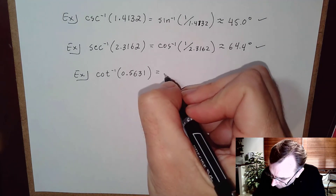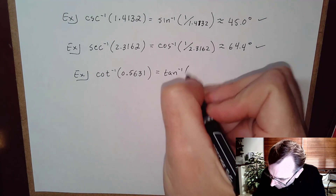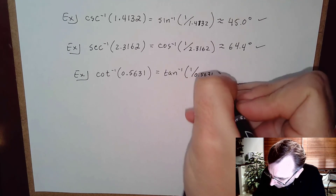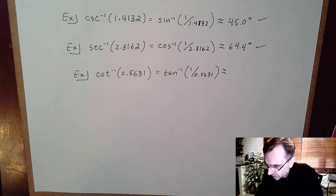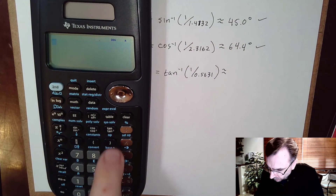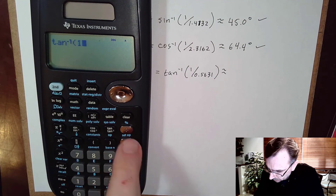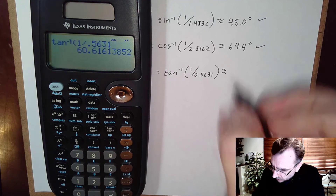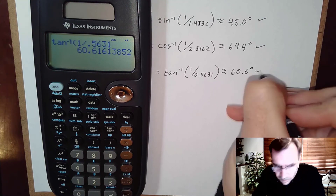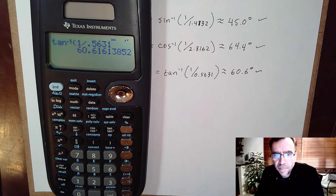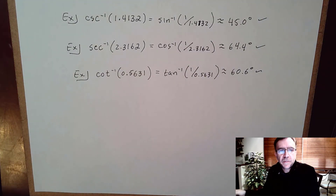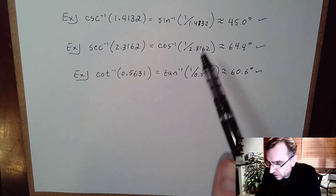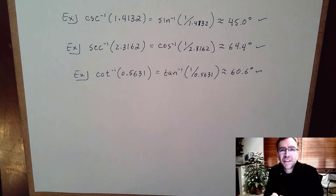Finally: cotangent inverse — cotangent is 1 over tangent, so we use tangent inverse. Tangent inverse of 1 over 0.5631 gives approximately 60.6 degrees. That's how you find the inverse of reciprocal trig functions on a calculator — good luck!